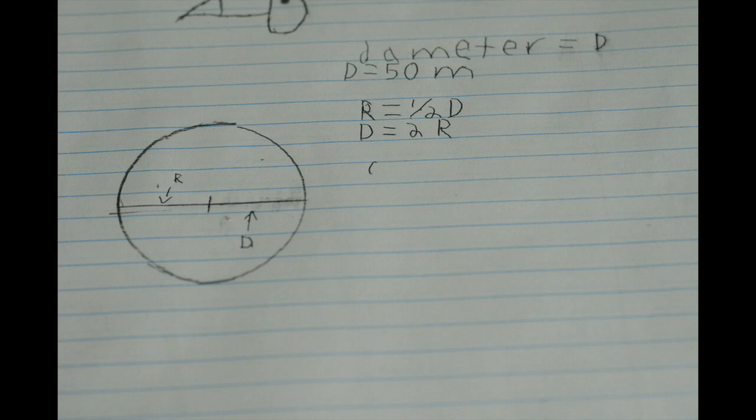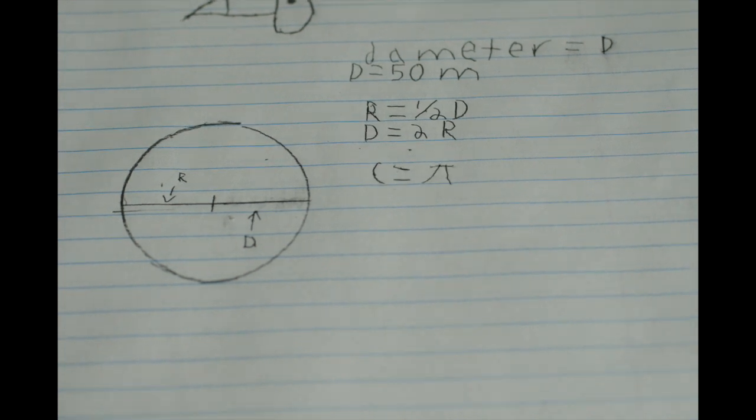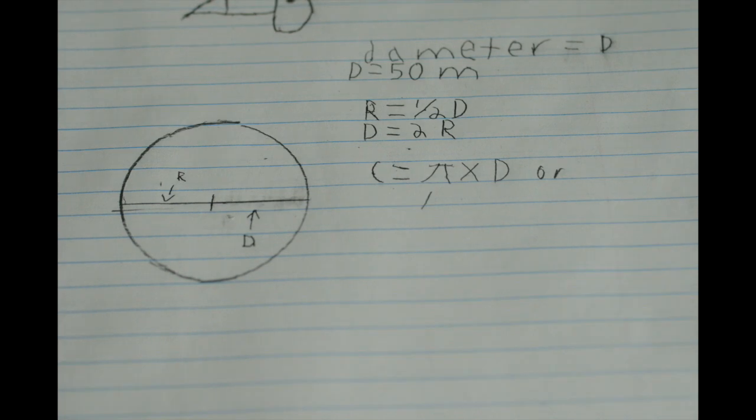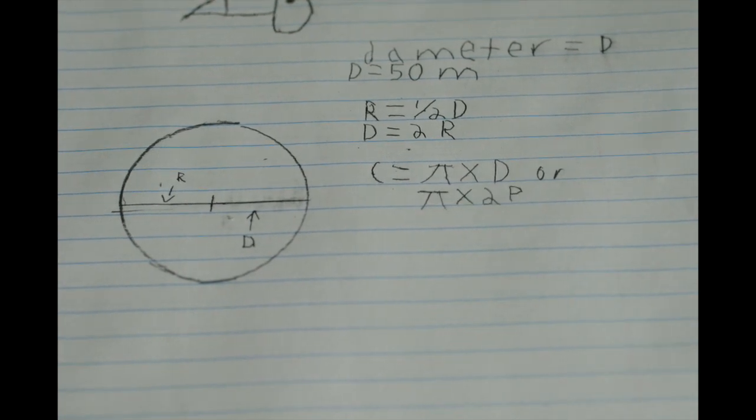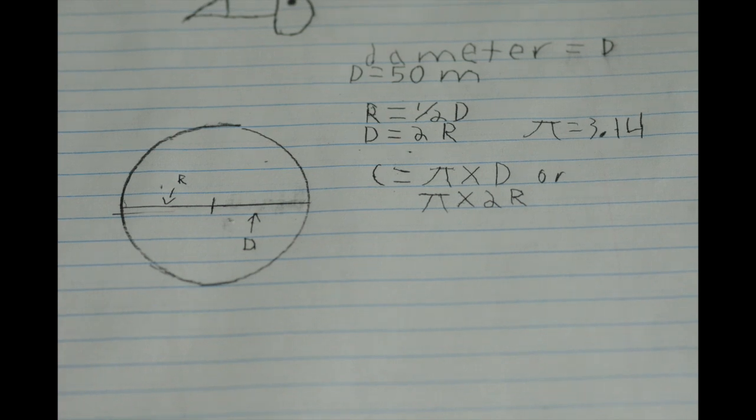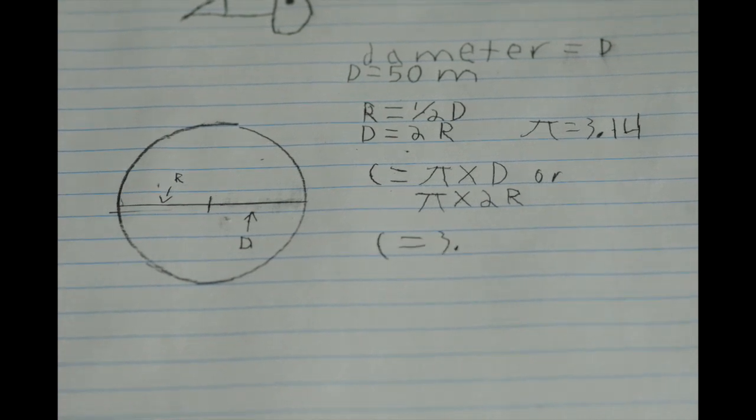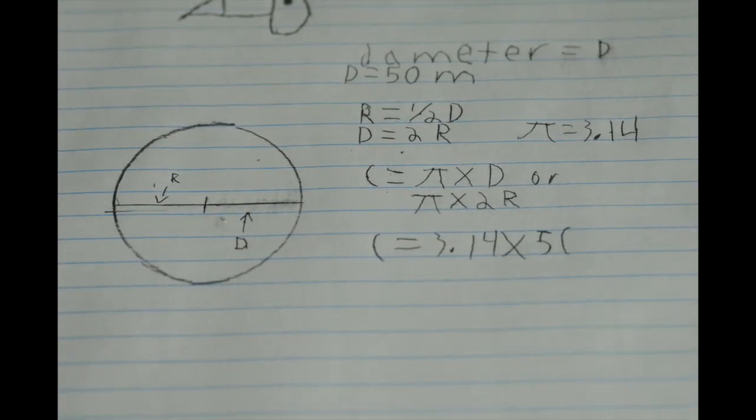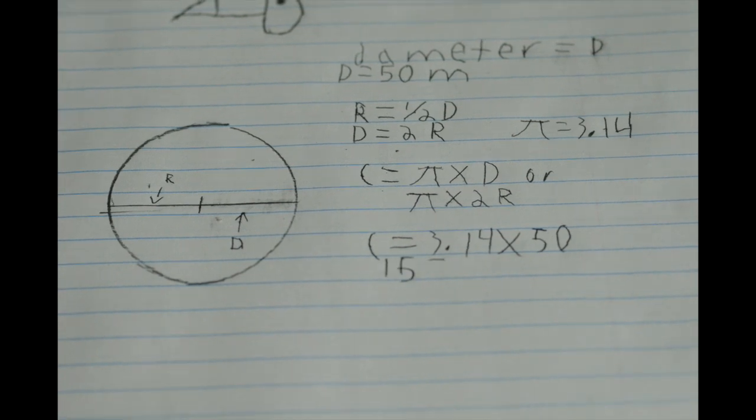The circumference is pi times diameter, or pi times two times the radius. Pi is equal to 3.14. So the circumference for Choco the Toucan's dome is 3.14 times 50, which is equal to 157.